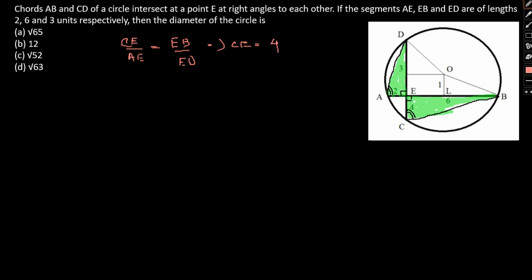Now, LB can be written as 6 plus 2 by 2, that is 4. LB again will be equal to 4. So this LB will be 4.